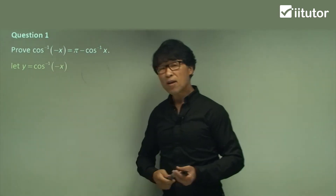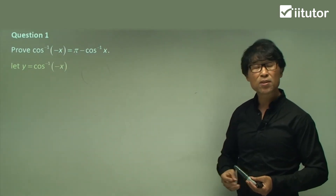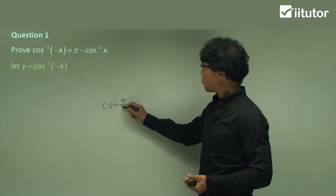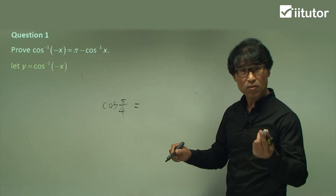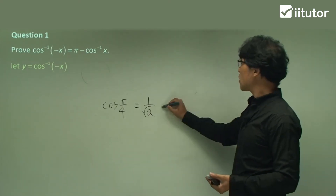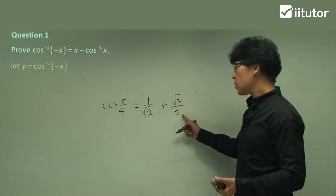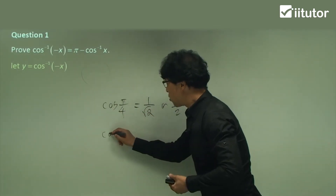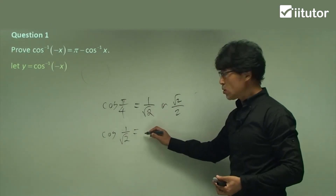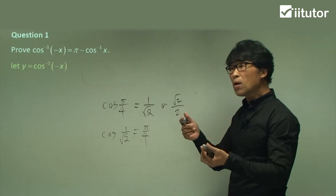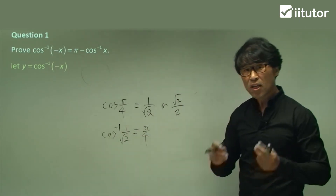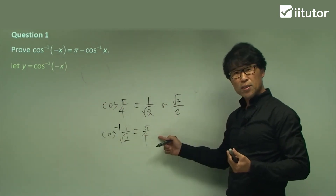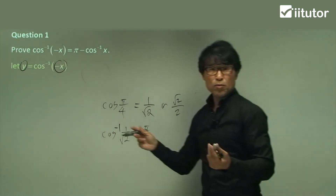Let y = cos⁻¹(-x). Now in the inverse function — for example, cos(π/4) equals 1/√2. You can also write it as √2/2. So in the inverse function, we swap those values: cos⁻¹(1/√2) = π/4. We are going to do the same thing here. We swap the two values: negative x moves to the left-hand side, y moves to the right-hand side, and the inverse notation disappears. Then we multiply both sides by negative one.